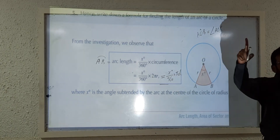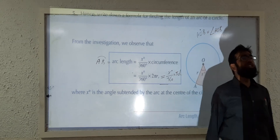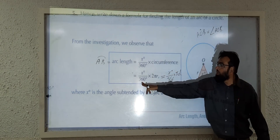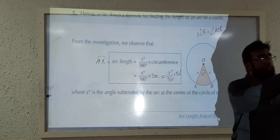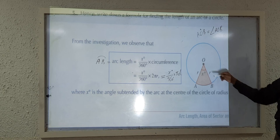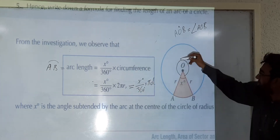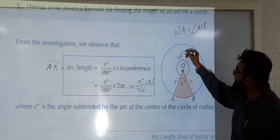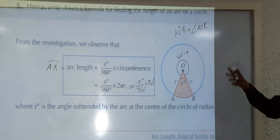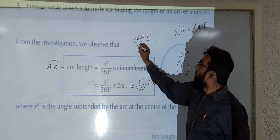You can use diameter instead of radius if you know the diameter, because sometimes diameter makes calculation easier and sometimes radius does — it depends on the question. So the formula is: (x° / 360°) × πd or (x° / 360°) × 2πr. Now if we are going to find the major arc shown in blue, we need to find this angle, which is 360 minus x.